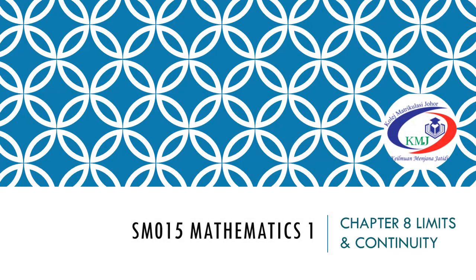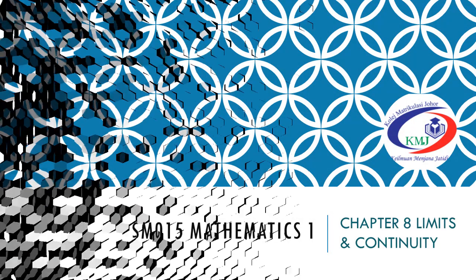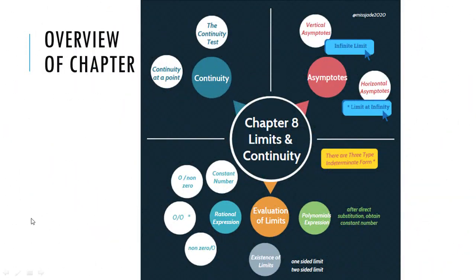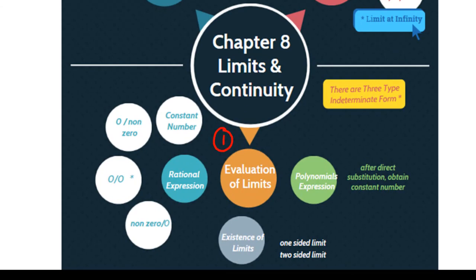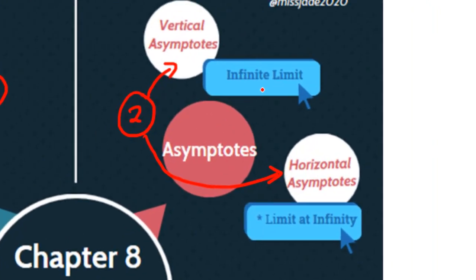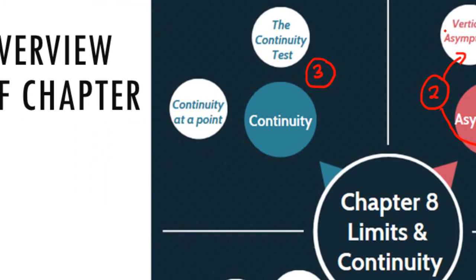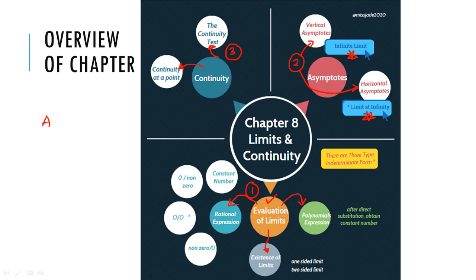Welcome to the new chapter: Limits and Continuity. Let us look at the overview of the chapter. Basically we have three subtopics. First is about evaluation of limits — rational expressions and polynomial expressions — and the most important part is how to find the existence of a limit, which involves one-sided and two-sided limits. Second is asymptotes, vertical and horizontal. The last one is about continuity.